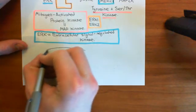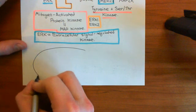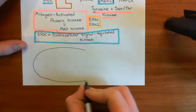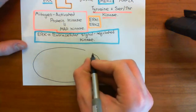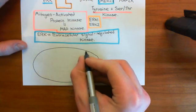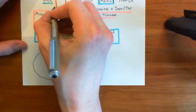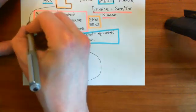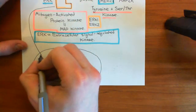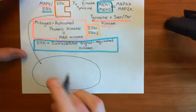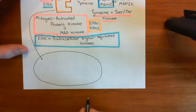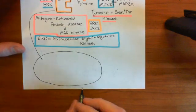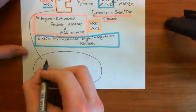Let's have our nucleus here — I'll draw it a little bit more elongated so that I've got as much space as possible. In comes our ERK enzyme, coming into the nucleus, and it's going to phosphorylate transcription factors.